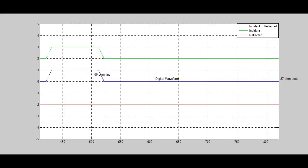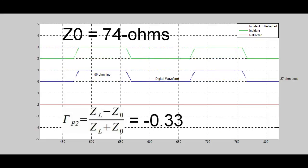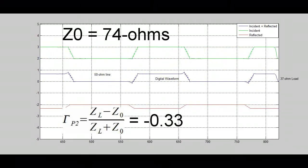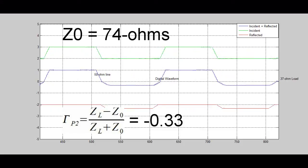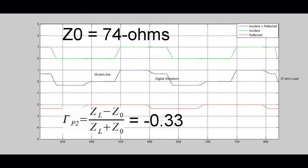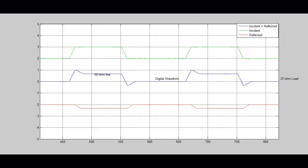Now we're going to send a digital signal down the line. And instead of an open or a short, we'll be using a 37 ohm load and a 74 ohm transmission line. We expect to see a negative 1 third volt reflection. Since our pulses are periodic, we can see more instances of the green incident and the red reflected waves summing together to make the actual voltages on the line in blue.